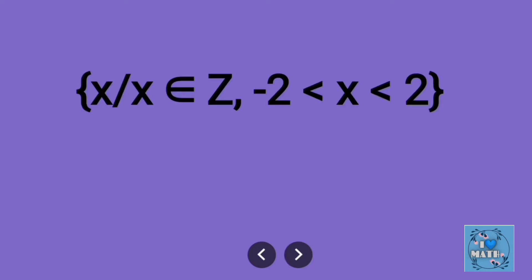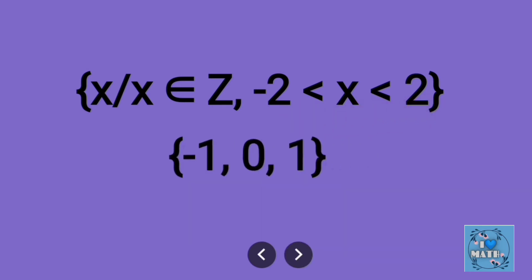Next example: { x | x ∈ Z, -2 < x < 2 }. These are the integers between -2 and 2. The elements are -1, 0, and 1.